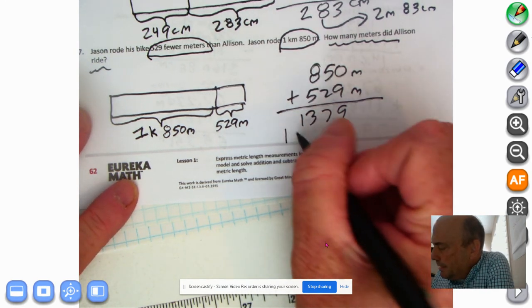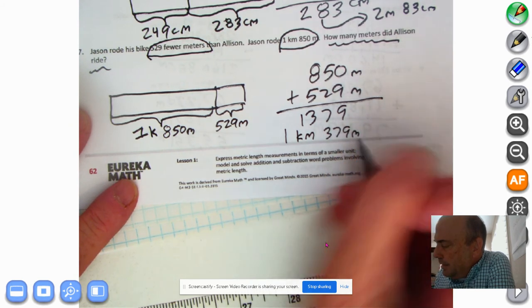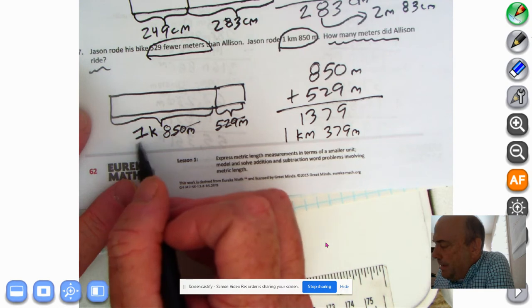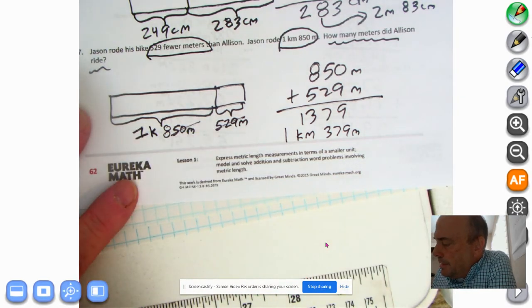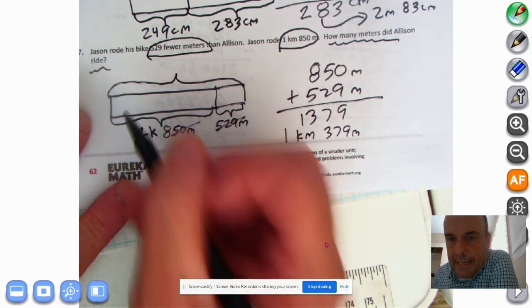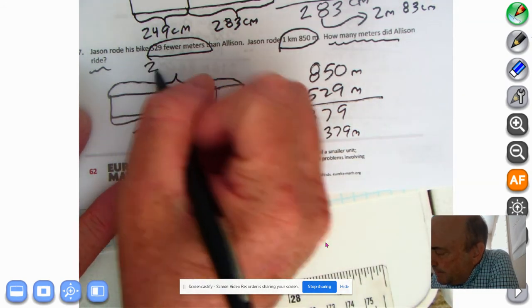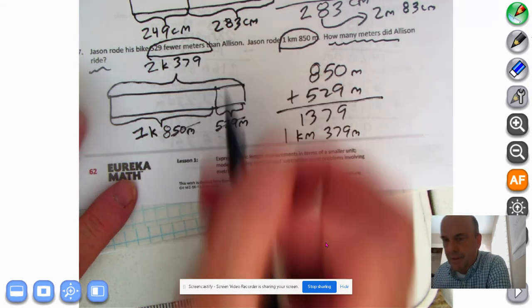So now this becomes 1 kilometer, 379 meters. And, look, all we got to do, because I've added this and I've added that, all we got to do is add the kilometer on. So that becomes 2 kilometers, 379 meters. And that is how far Allison rode her bike. So she rode 2 kilometers, 379 meters. And that was my simplifying strategy.